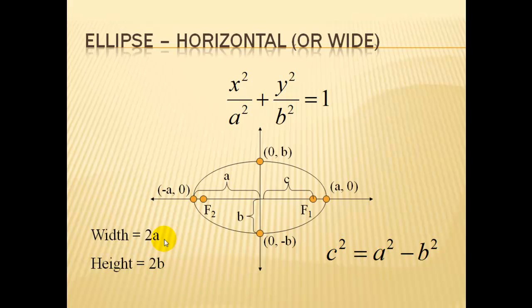Sometimes we will use when we're writing it the total width of an ellipse is going to be 2 times a and the total height will be 2 times b.